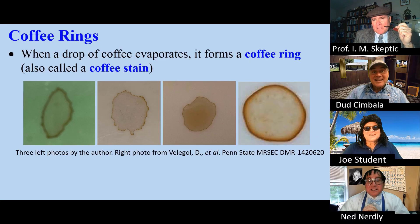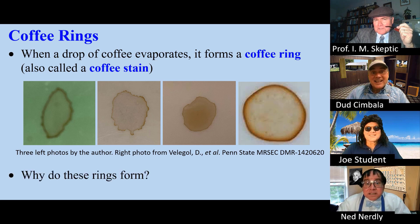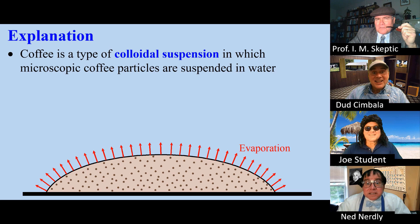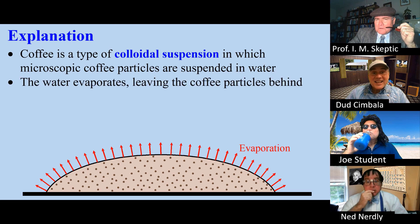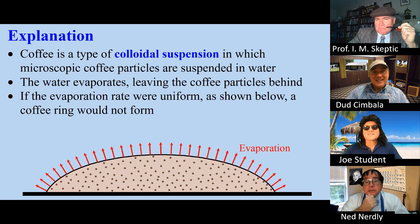When a drop of coffee evaporates, it forms a coffee ring, also called a coffee stain. Here are some examples. Why do these rings form? Coffee is a type of colloidal suspension — microscopic particles suspended in water. When the water evaporates, coffee particles are left behind. If evaporation were uniform, no coffee rings would form.